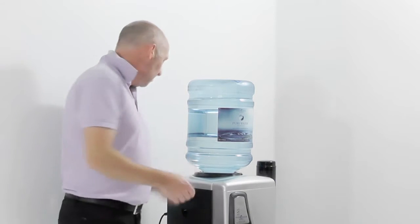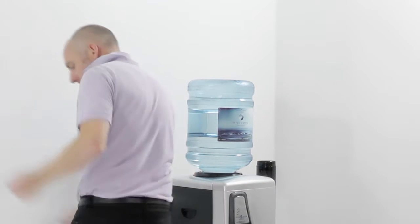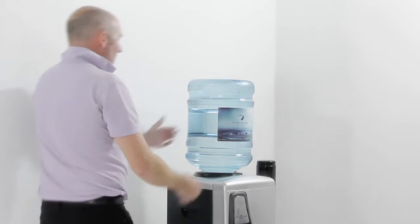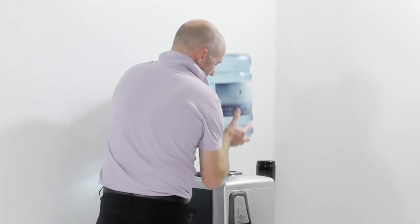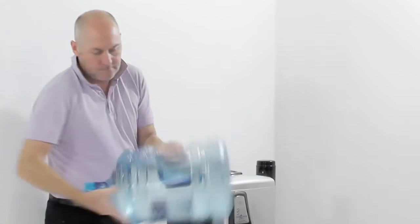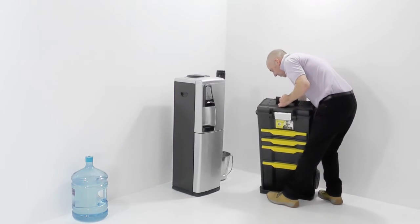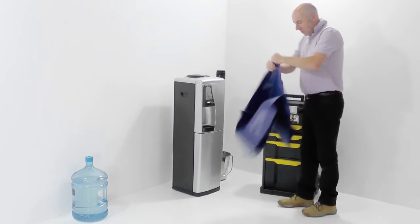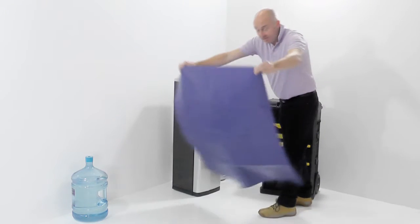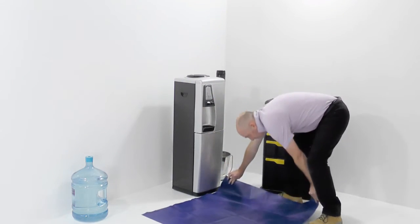Okay so the first thing we're going to do is unplug the machine and take the bottle off. We're going to get our sunny canvas which gives us a clean area and protects, more importantly, the customer's floor.